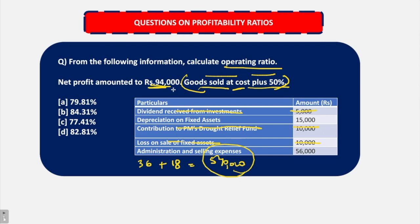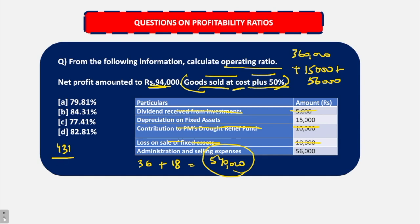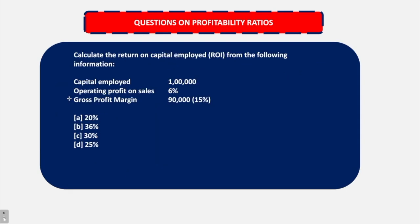In the numerator we will have operating expenses and COGS. COGS is 3,60,000. Operating expenses: 15,000 depreciation and 56,000 for administration and selling expenses. There are no operating incomes. Therefore our answer comes out to be 4,31,000 upon 5,40,000 into 100. So the answer is 79.81%.